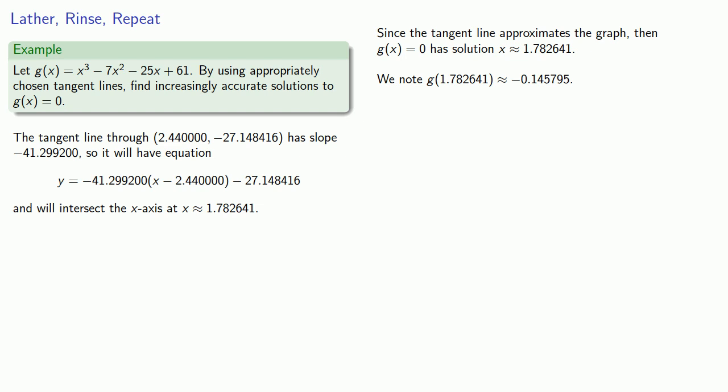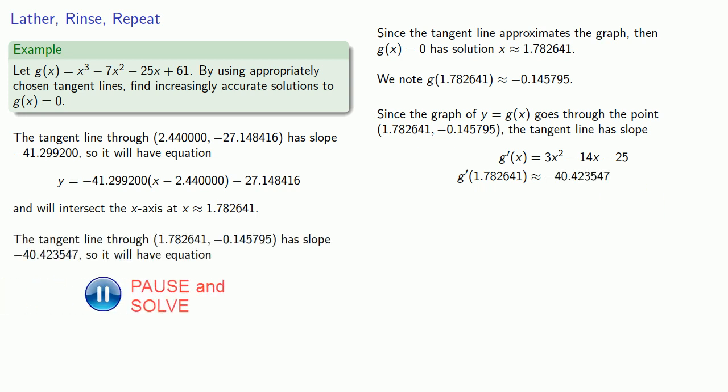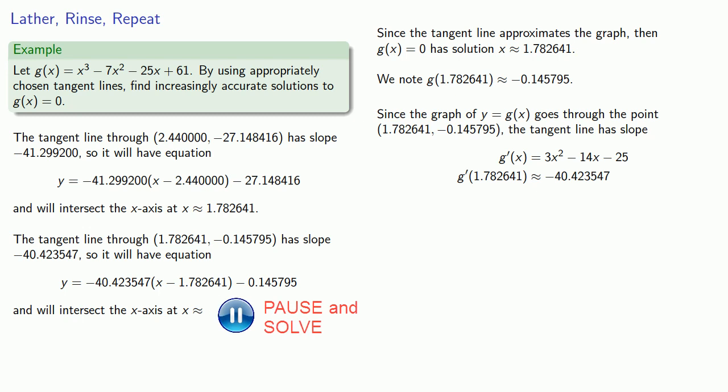Let's try it again. Since the graph of y equals g(x) goes through this point, we can find the tangent line using the derivative. The derivative at this point is, which allows us to write the equation of the tangent line. We can determine that this tangent line will intersect the x-axis at, which will be an approximate solution to g(x) equals 0.